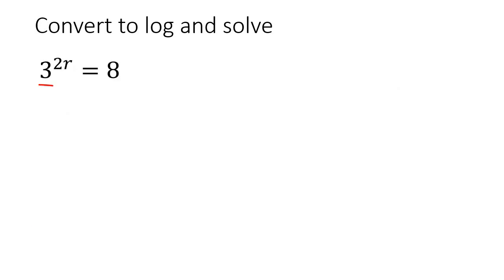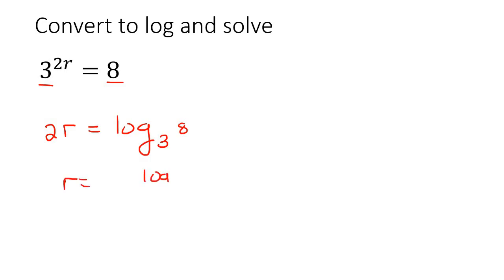Here's the next one. This 3 and this 8 cannot be the same, so you take the exponent, which is not just r — it's 2r, the whole exponent. You make it equal to log of the base and then the other number. To get r by itself, it would be log base 3 of 8, divided by 2. If you calculate that on the calculator, you should get 0.95 rounded to two decimal places.